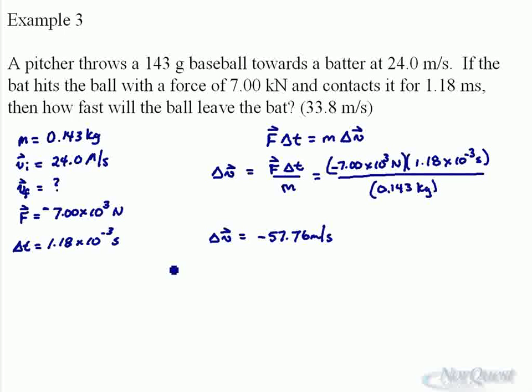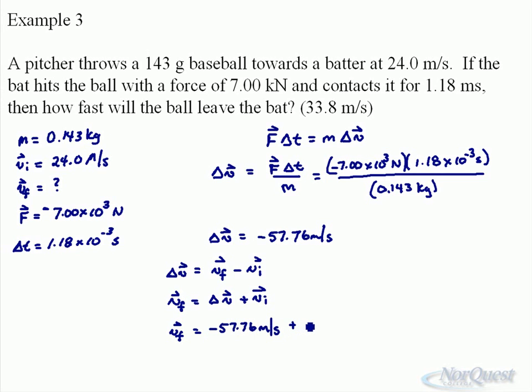That's our change in velocity. Now change in velocity equals Vf minus Vi. So if we work this out, final velocity will be equal to the change in velocity plus the initial velocity. If you manipulate that formula, change in time, final minus initial. Change in velocity, final minus initial. That's what change means. From what point to what point? Final, subtract, initial. So the final velocity will be equal to negative 57.76 meters per second plus 24.0 meters per second.